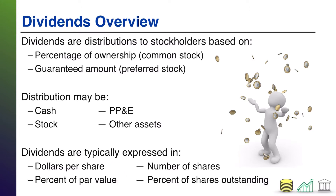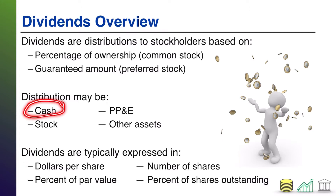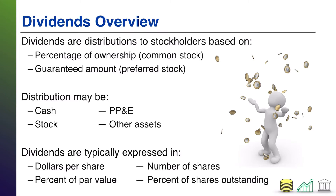If it's a stock dividend, it may be expressed as everyone gets 100 shares, or you are going to get a dividend of ten percent of the shares outstanding. That's what the company would declare, then divide that pool among the various stockholders. Since cash is the most common dividend and common stockholders are the most common stockholders, you'll typically see the dollars per share wording as part of a cash dividend.